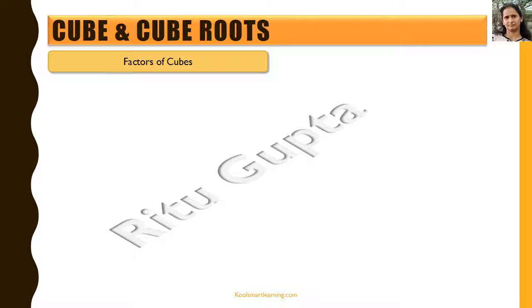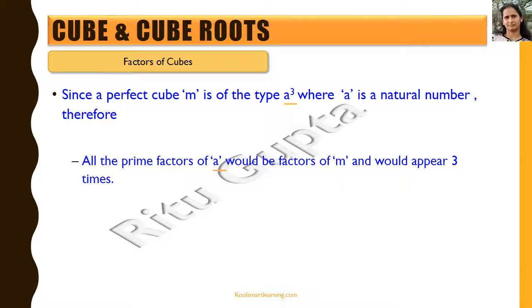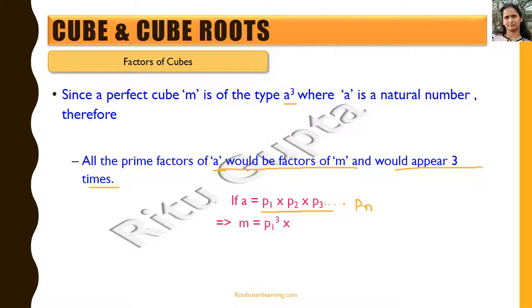Now let's look at the prime factors of perfect cubes. Since a perfect cube m = a³ where a is a natural number, all prime factors of a also appear in m, but three times each. If a = p₁ × p₂ × p₃ × ... × pₙ, then m = p₁³ × p₂³ × p₃³ × ... × pₙ³. Every prime factor of a appears cubed in m.